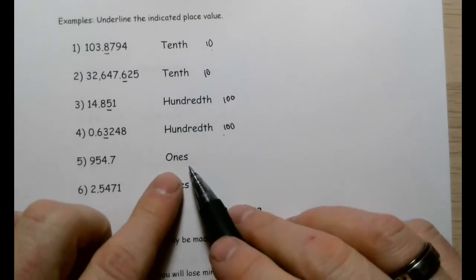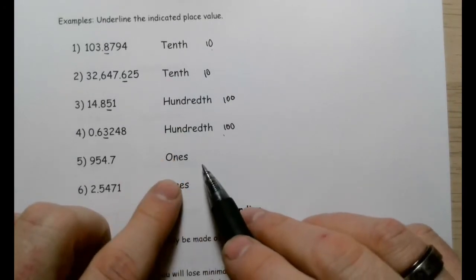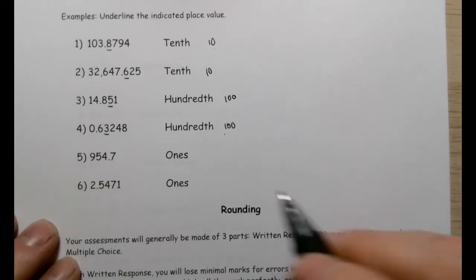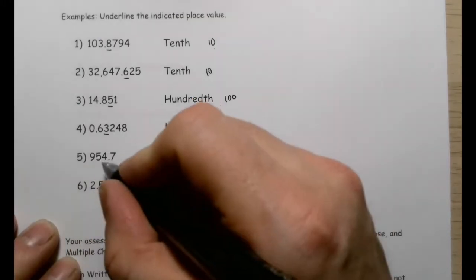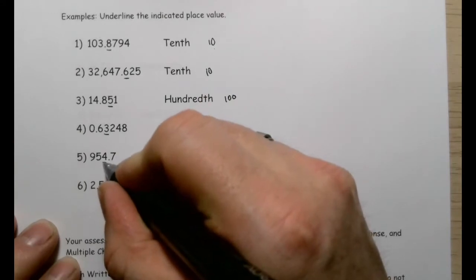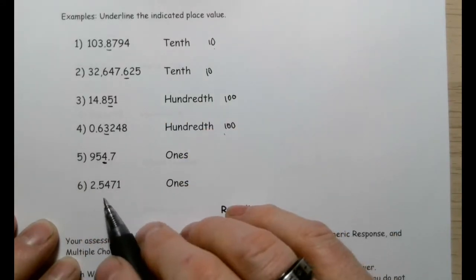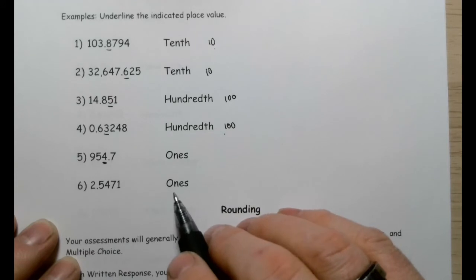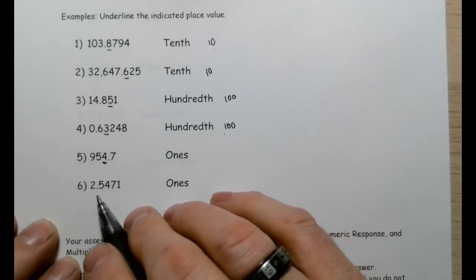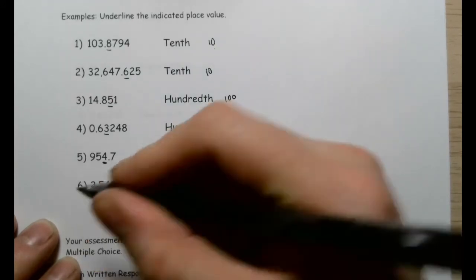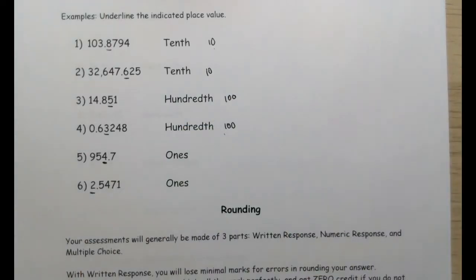For 'ones,' there's no 'th' ending, so I know I'm going to the left of the decimal. The ones position is just immediately to the left of the decimal — in this case that's the number two.